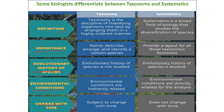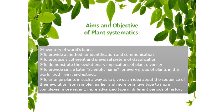Taxonomy and systematic are two concepts used to identify and describe organisms. Taxonomy is a component of systematic. In taxonomy, organisms are biologically classified and named. In systematic, the phylogenetic relationship of organisms is evaluated in addition to taxonomy. The main difference between taxonomy and systematic is the components that are used by them.